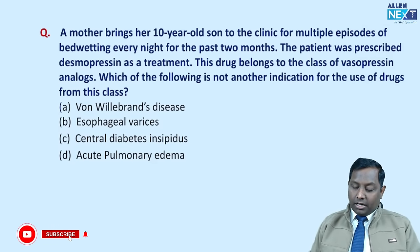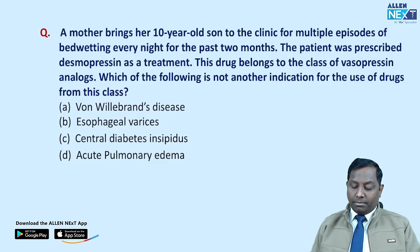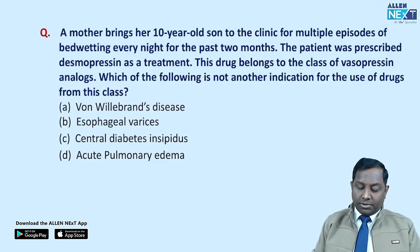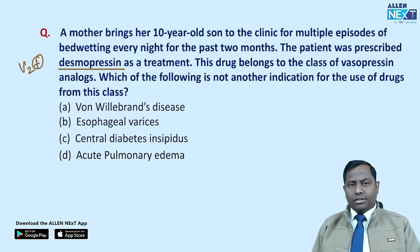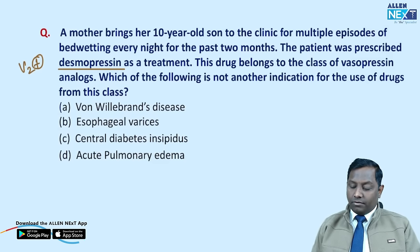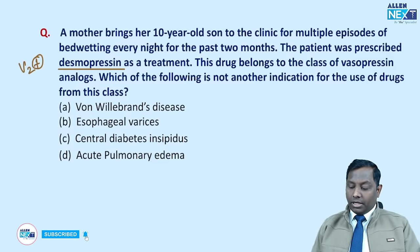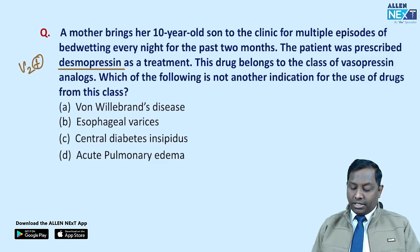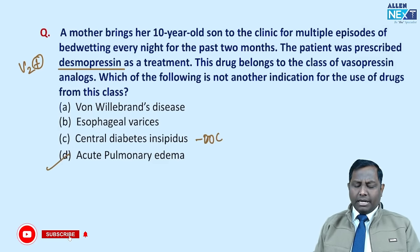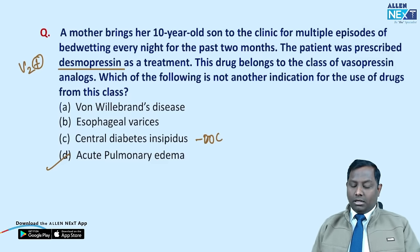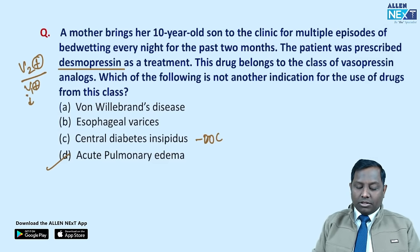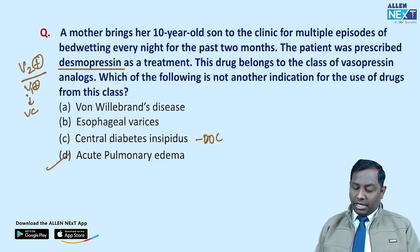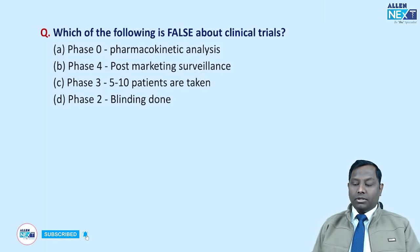A mother brings her 10-year-old son with multiple episodes of bedwetting nightly for two months. He is prescribed desmopressin — a synthetic vasopressin V2 analog. The question asks which is NOT another indication for this drug class. Acute pulmonary edema has no role for V2 analogs. Von Willebrand disease and esophageal varices are valid indications — desmopressin also has V1 analog properties causing vasoconstriction, which is why it helps in esophageal varices.